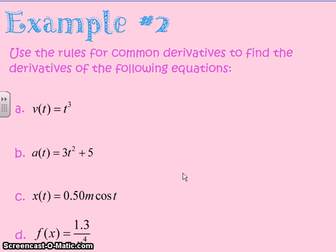This first problem falls under the format where we have c times x to the n, except for this time our variable is t. We have no c. c is just 1, so 1 times anything is just whatever that thing is. And n is 3.